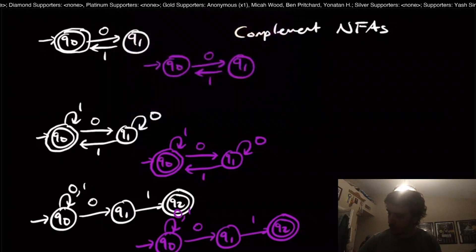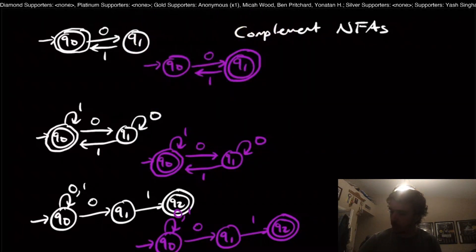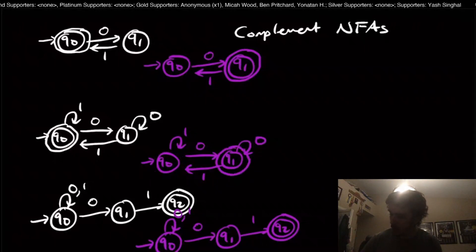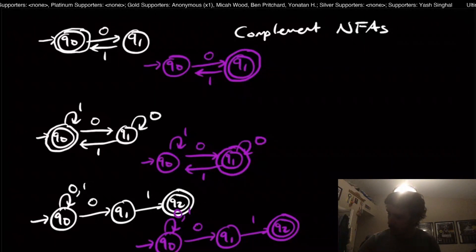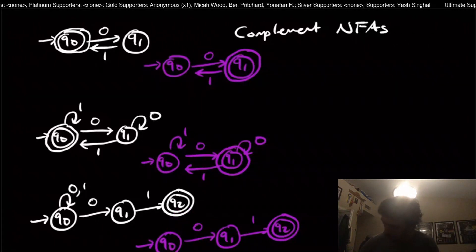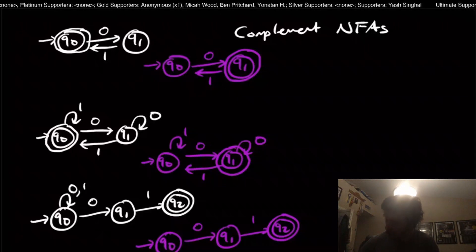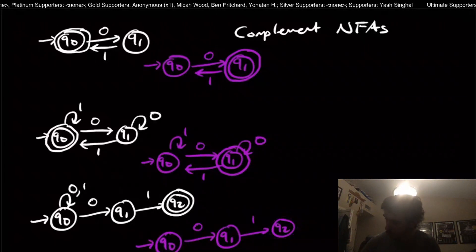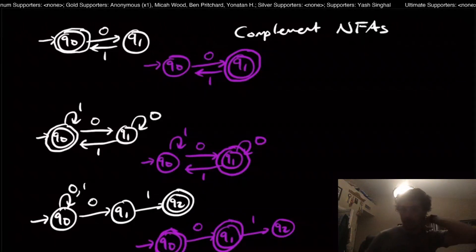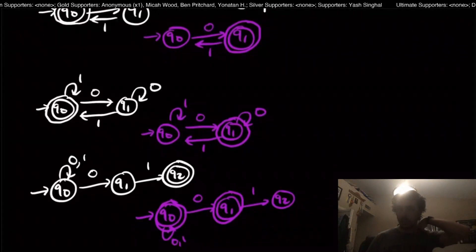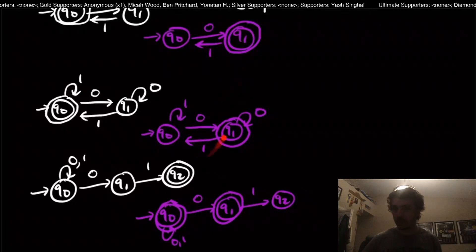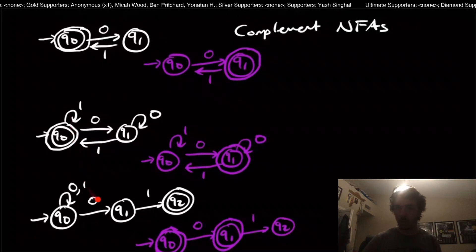I'm going to switch which states are final. This one is going to be the only final state that was not final, and now q1 is final. For this one, q2 is not final anymore, and q1 and q0 are final. Now I want to answer some questions about how the language of these complement machines relates to the language of the original machines.